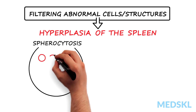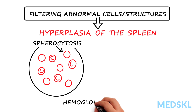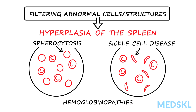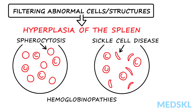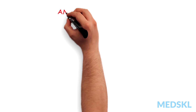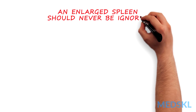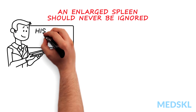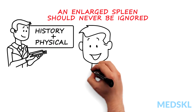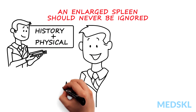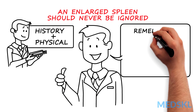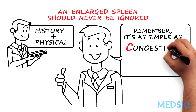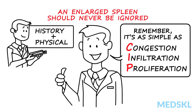These include spherocytosis, hemoglobinopathies, and sickle cell disease. An enlarged spleen should never be ignored, and a proper history and physical can make this broad differential much easier to stratify. Remember, it's as simple as CIP.